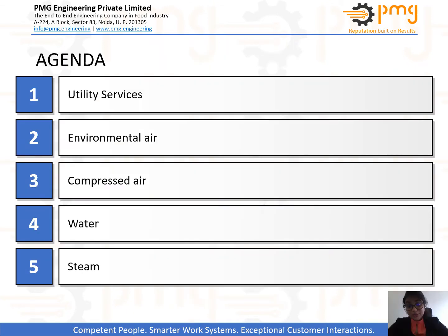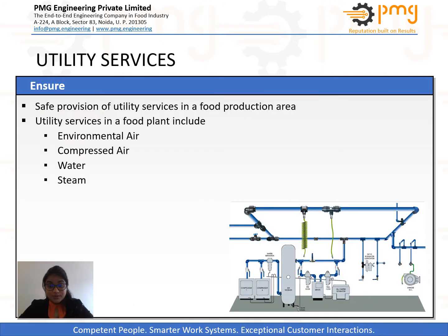So friends, in today's module we will discuss in detail about utilities — what utilities are, how many types they are, and why they are important in food process industries. We will also discuss in brief about what parameters need to be considered when designing utilities so that they do not become the source of cross contamination. Let us begin with the first slide, which is about utilities and its management.